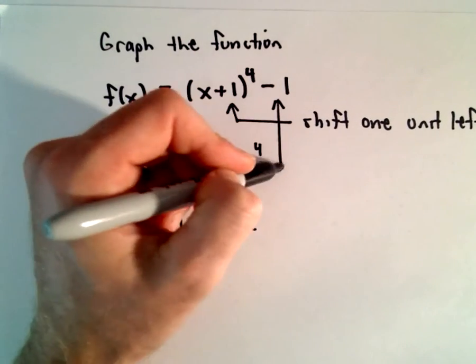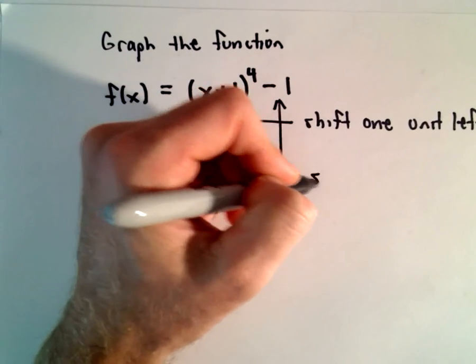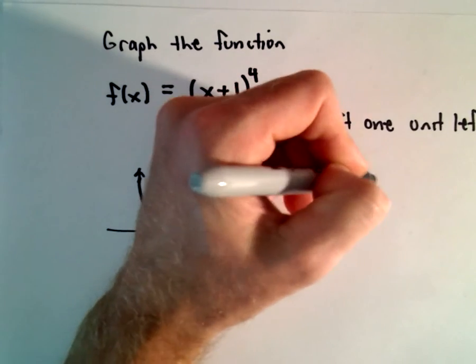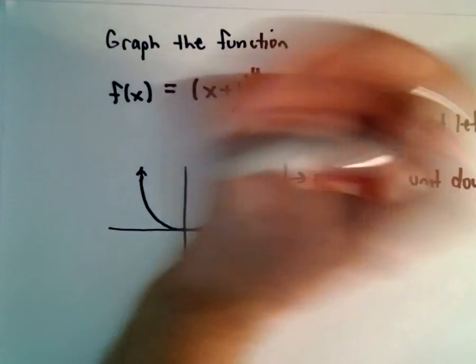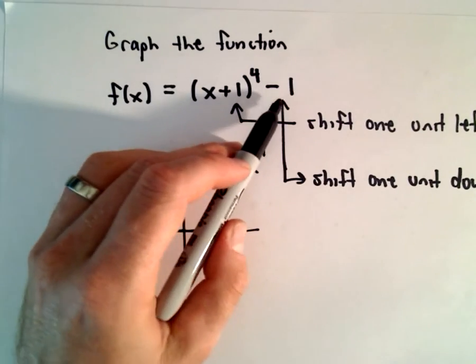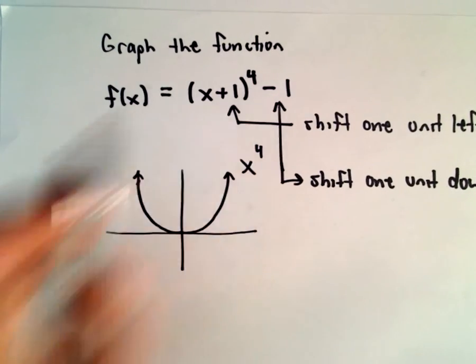The -1 on the outside is going to have the effect of shifting the graph. It's going to shift one unit down. So if it's on the outside and you see a negative, do go down. If it's a positive, do go up.